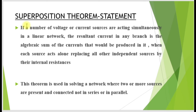The statement for superposition theorem: if a number of voltage or current sources are acting simultaneously in a linear network, the resultant current in any branch is the algebraic sum of the currents that would be produced in it when each source acts alone, replacing all other independent sources by their internal resistances.